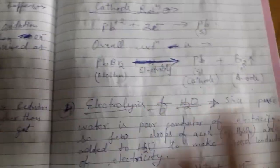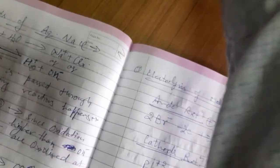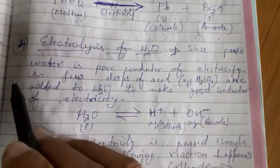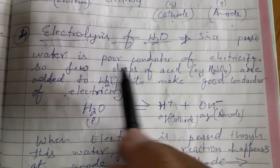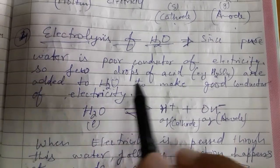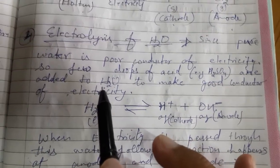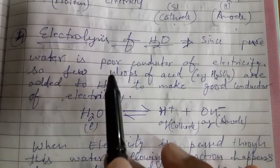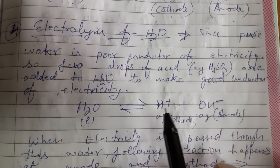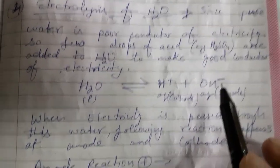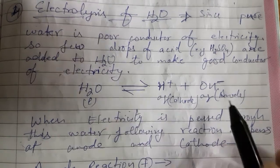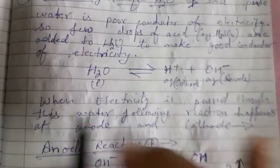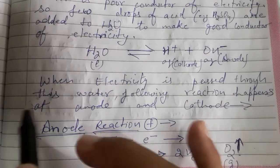Then comes electrolysis of water. Pure water is a poor conductor of electricity, so a few drops of acid like sulfuric acid are added to water to make it a good conductor of electricity — this is important information. Water contains two types of ions: H⁺ and OH⁻. When electricity is passed, H⁺ ions go to the negative terminal cathode, and OH⁻ ions go to the anode.